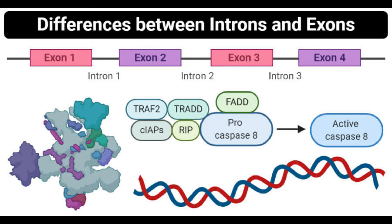Introns vs. Exons: Definition, 12 Major Differences, and Examples. Introns Definition: Introns are non-coding DNA sequences within a gene that are removed by RNA splicing during maturation of the RNA product. The term intron represents the introgenic region which is present within a gene.